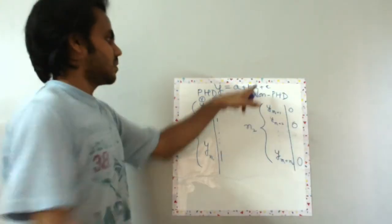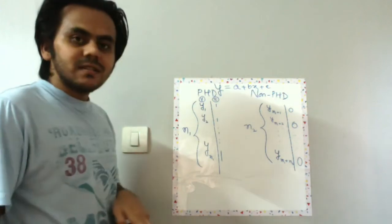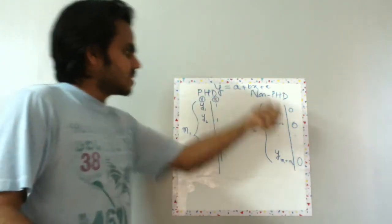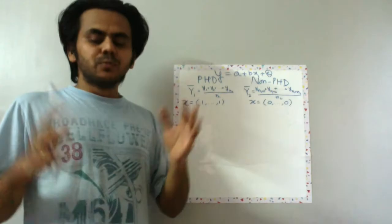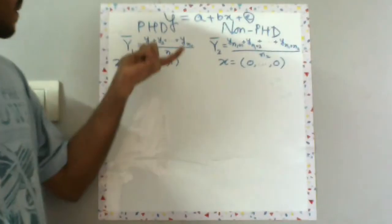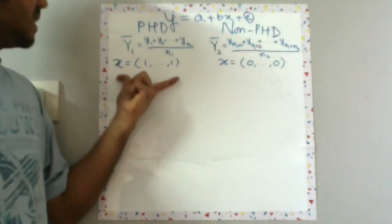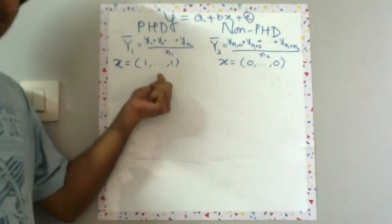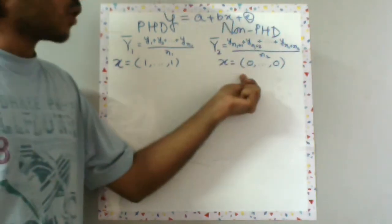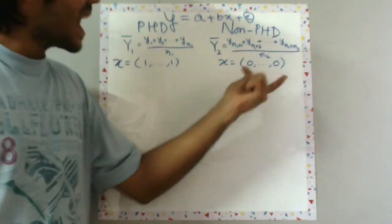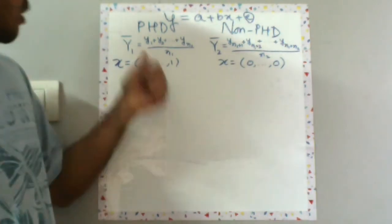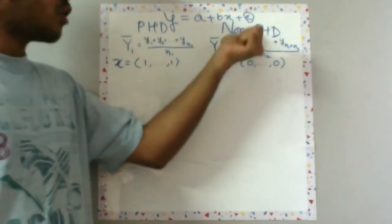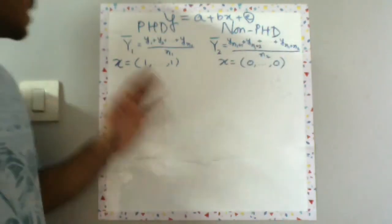We need to find out y is equal to a plus bx plus e. So these numbers one, one, one, zero, zero, zero is your x, and y corresponds to these salaries. Put it in a different way, we have given the x values for PhD graduates as one and the x values for non-PhD graduates as zero.